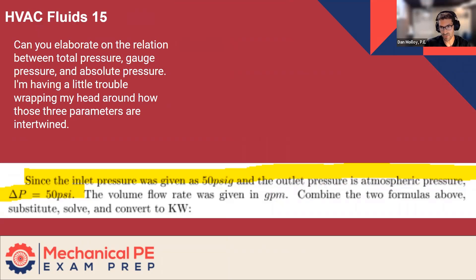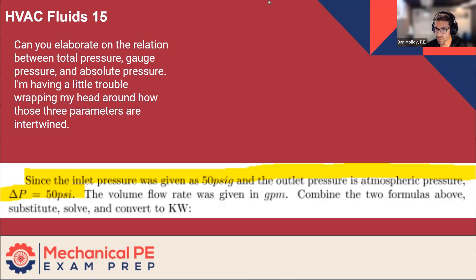So I guess I'll answer this in two ways. One, we'll just talk definitions, and then we'll talk about the context of the specific problem, or at least the aspect of it where we're finding the delta P. So in general, we'll say that the gauge pressure plus the atmospheric pressure equals the absolute pressure.